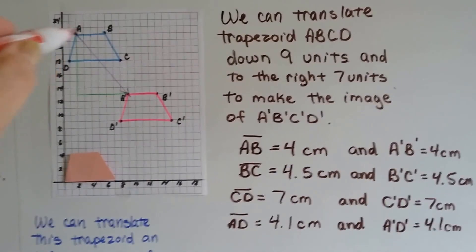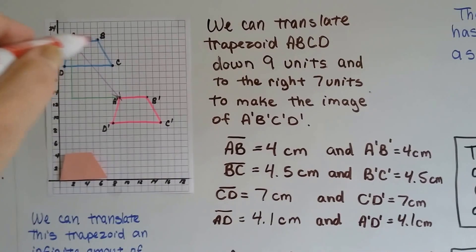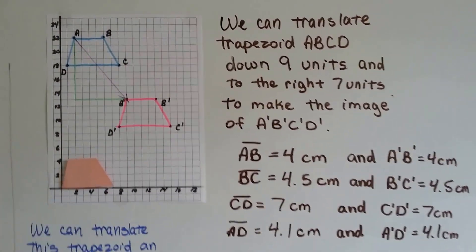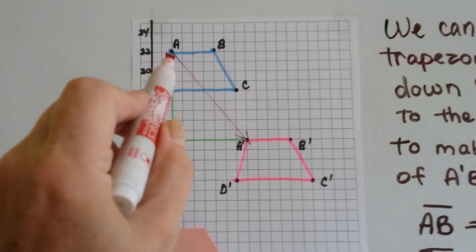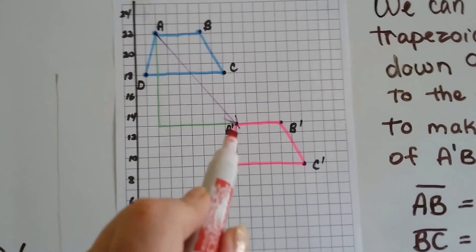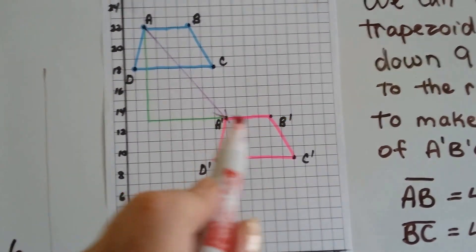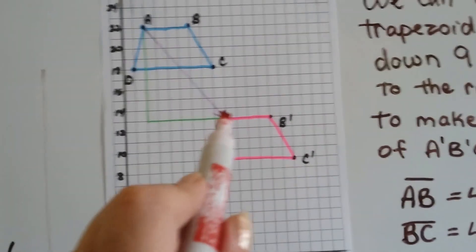Line AB, this line up here, is 4 centimeters. Each one of these squares is a centimeter. So line AB is 1, 2, 3, 4 centimeters. Well look, A prime and B prime, this line is 4 centimeters also.